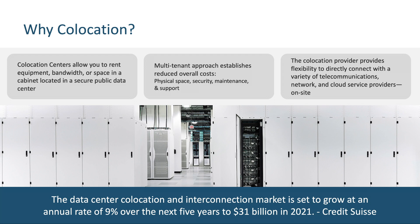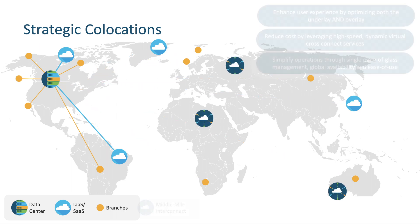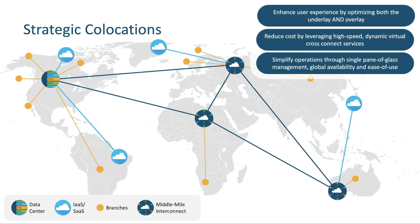Colocations position themselves intentionally at the cloud edge so that they can offer the customer reasonably inexpensive, dedicated bandwidth into the cloud provider of their choice. Knowing this, our customers can strategically select colocation facilities that have close proximity to their branch users and, in effect, extend the cloud edge as close to the branch as we can get it.